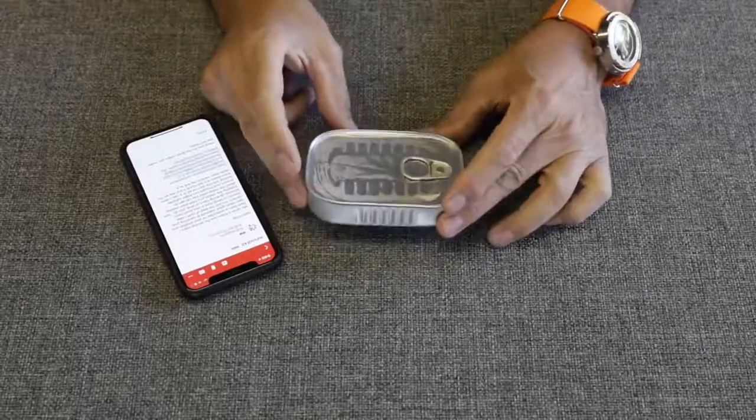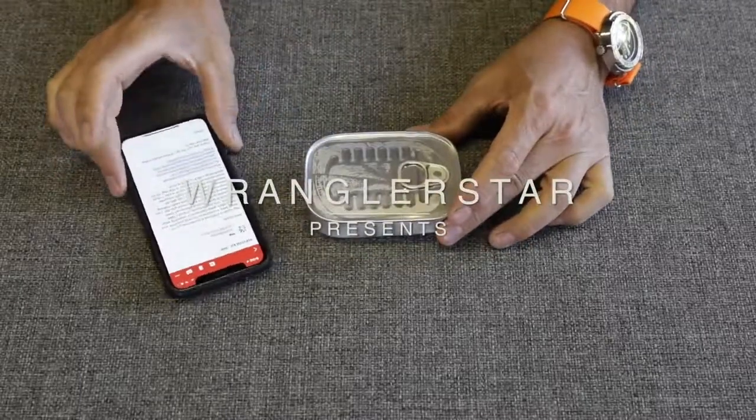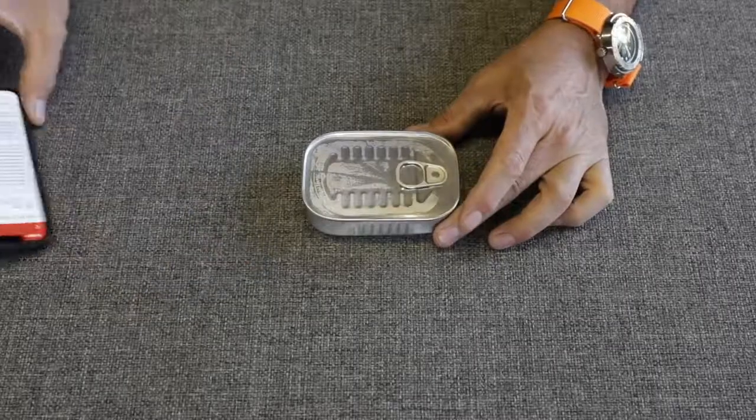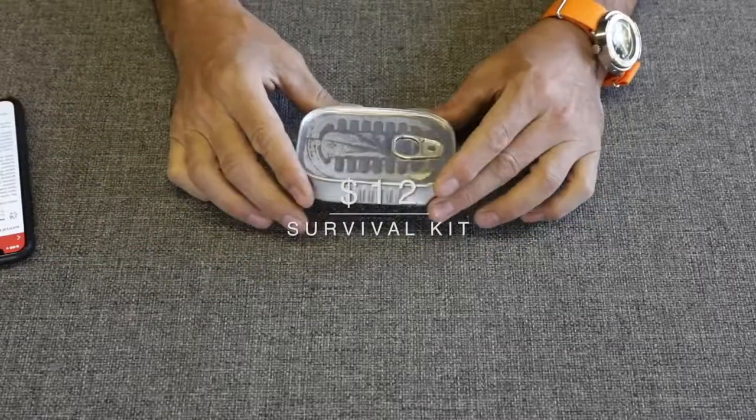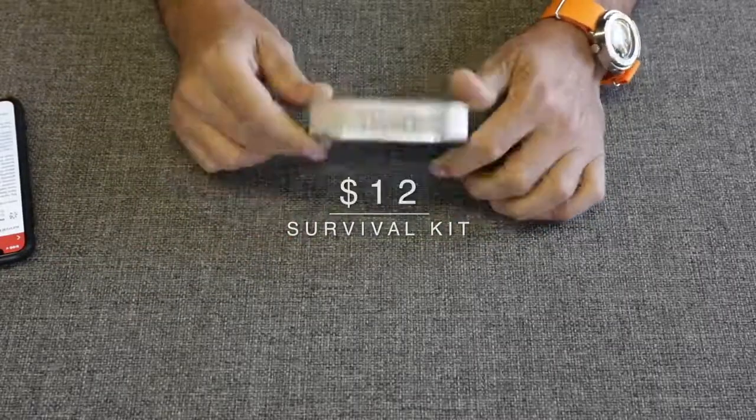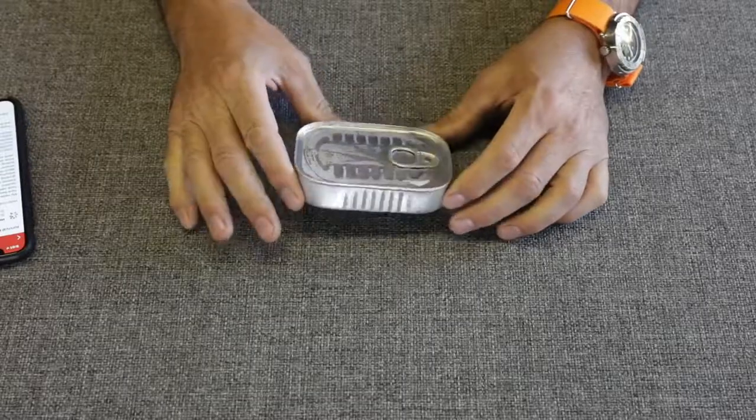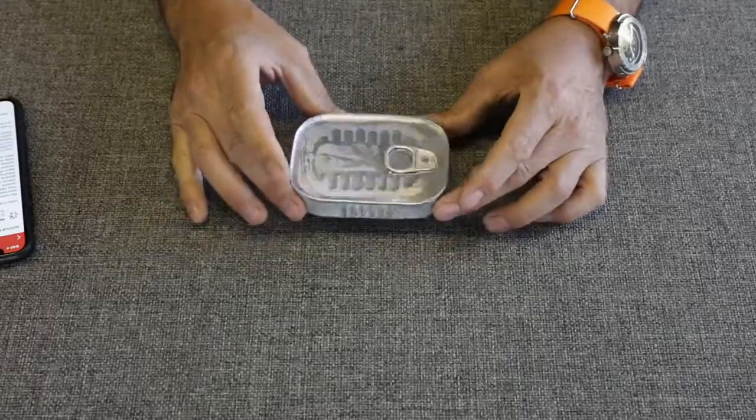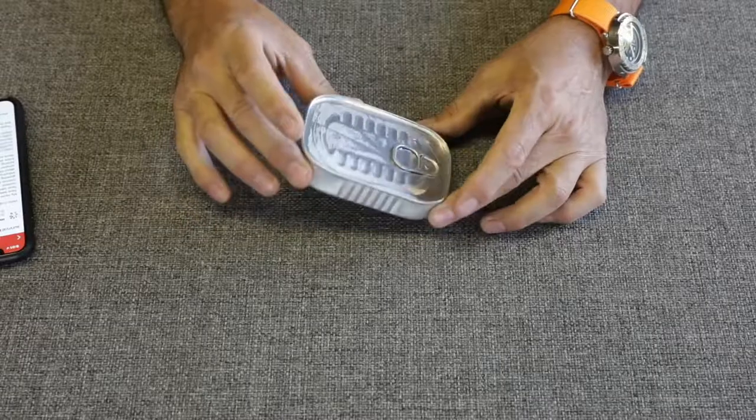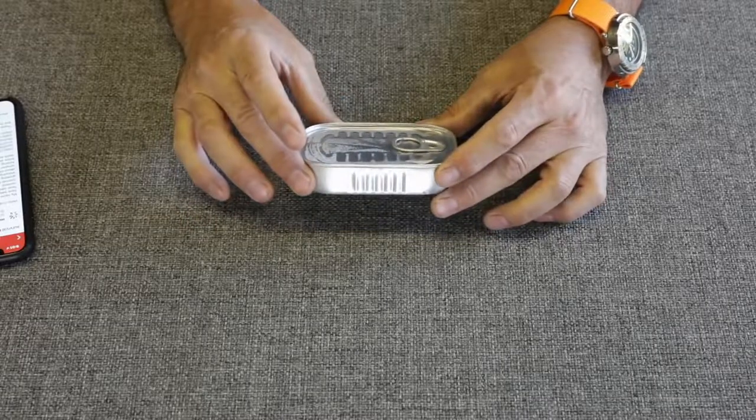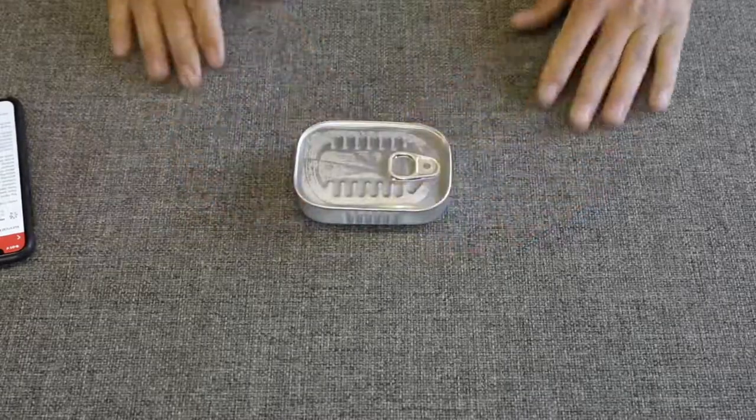So welcome back friends. This is a video that was requested by my subscriber by the name of Elliot. He said that he had come across a tuna can or sardine can survival kit on Amazon and wanted me to do a cheapest survival kit review on Amazon video. So that's what we're going to do today.